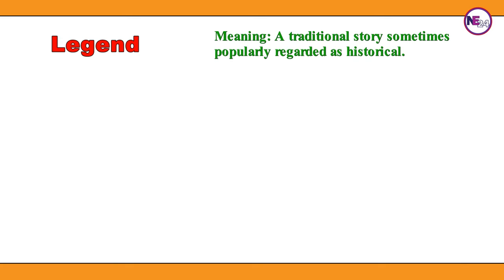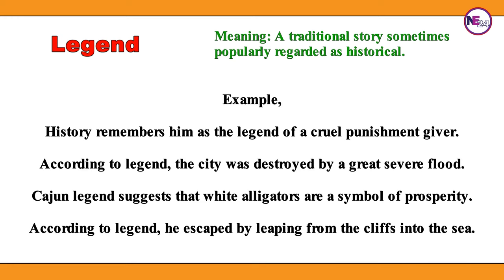Legend: a traditional story sometimes popularly regarded as historical. History remembers him as the legend of a cruel punishment giver. According to legend, the city was destroyed by a great severe flood. Cajun legend suggests that white alligators are a symbol of prosperity. According to legend, he escaped by leaping from the cliffs into the sea.